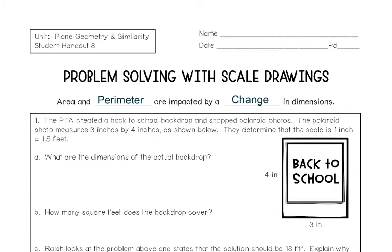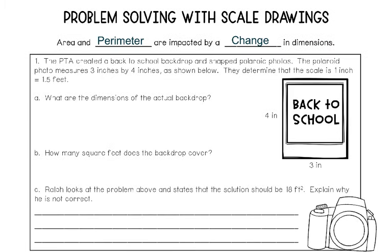We learned in the last lesson that similar figures have the same shape but are different sizes. If the shapes are different sizes, that means that in similar figures or in scale drawings, the area and perimeter are going to be impacted by the change in dimensions. That dimensions word just means length times width. So let's jump right in with an example.